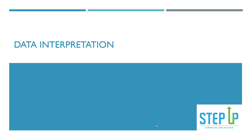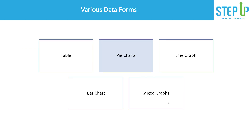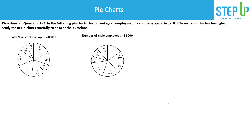Hello and welcome to the second video on data interpretation. In my previous video I discussed data in tabular format. In this video we'll look at the second form, which is pie charts. The first thing about a pie chart is that in percentage terms it will always be 100%, which is 360 degrees. Half would be 180 degrees or 50%, and so on.